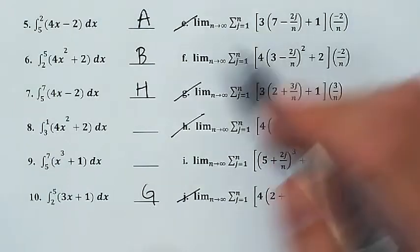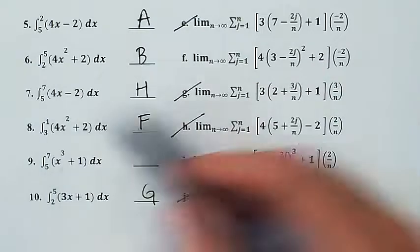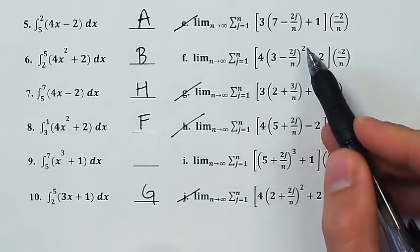And I did that. Integral from 3 to 1. Well, that's got a width of negative 2. So I know it's going to be f, but might as well verify. It starts at 3 and it's 4x² + 2.